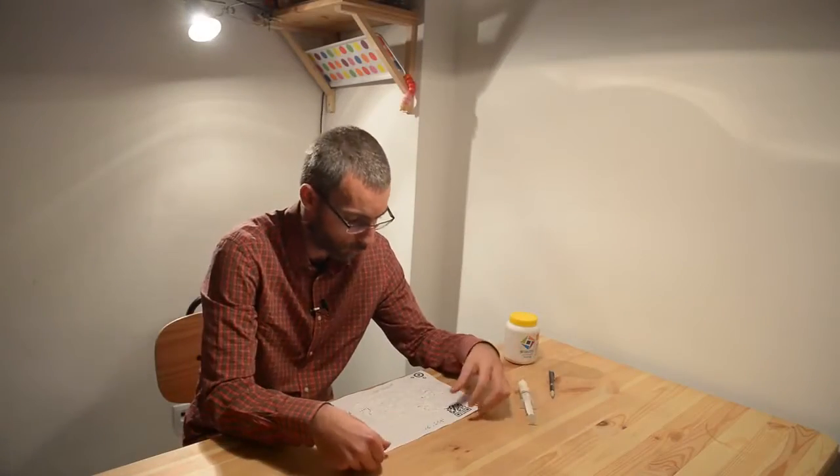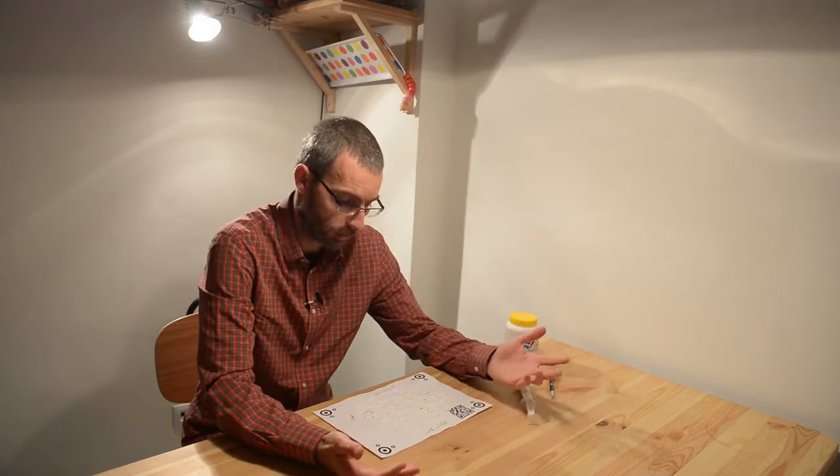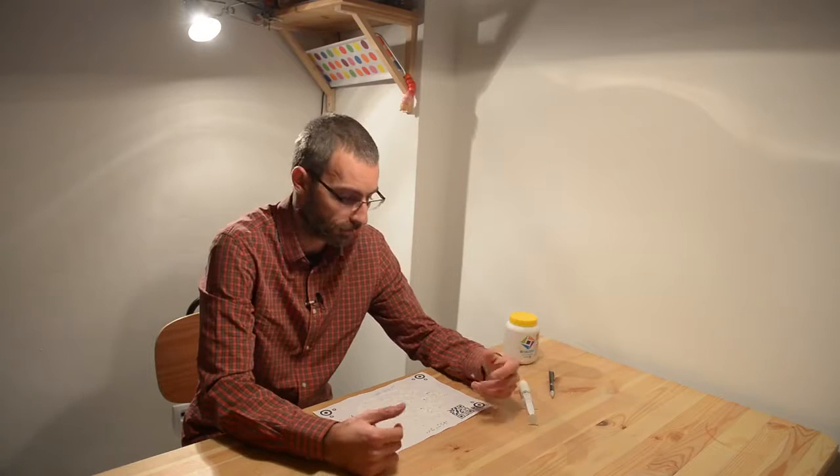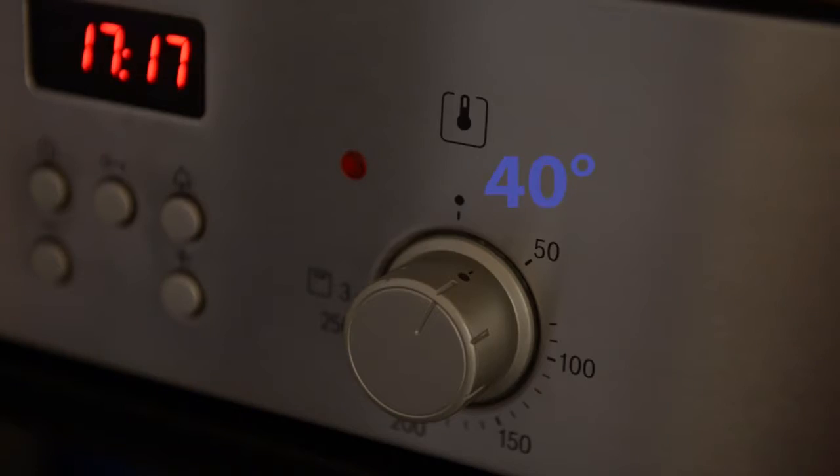After we've drawn all the contours, we have to let the glue dry. We can leave it in the air for one or two hours, or put it in the oven at 30-40 degrees. Let's see that.